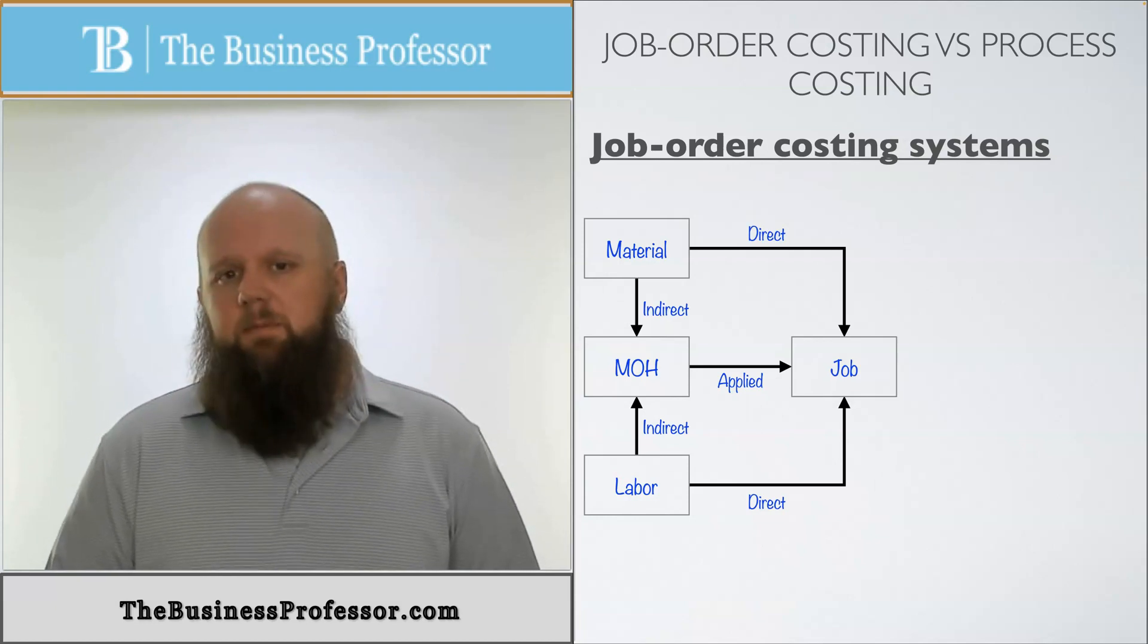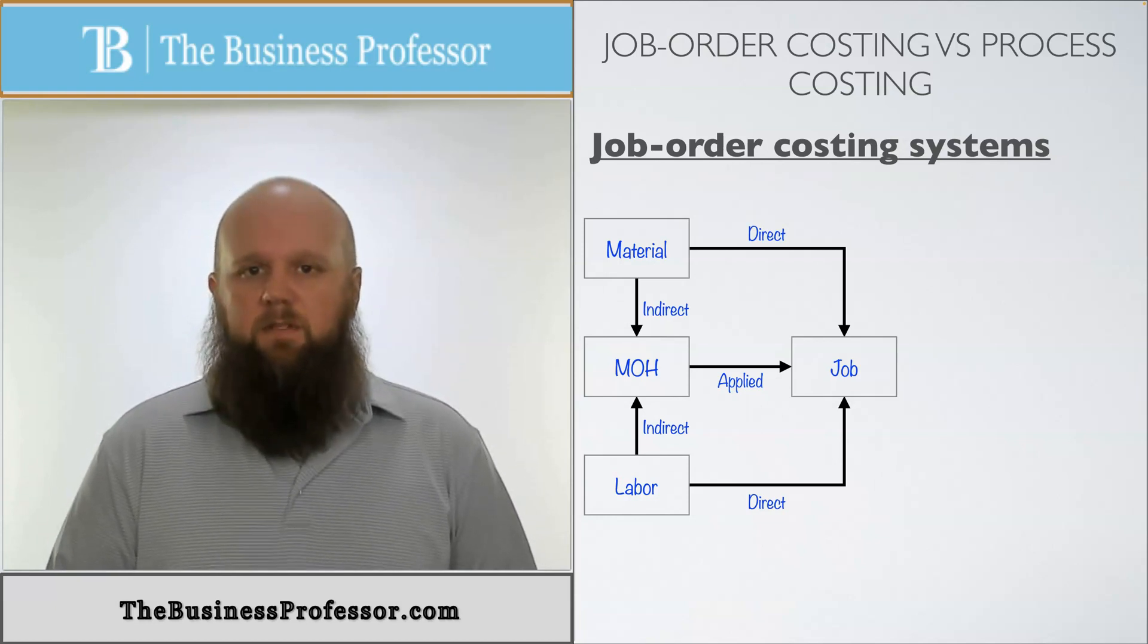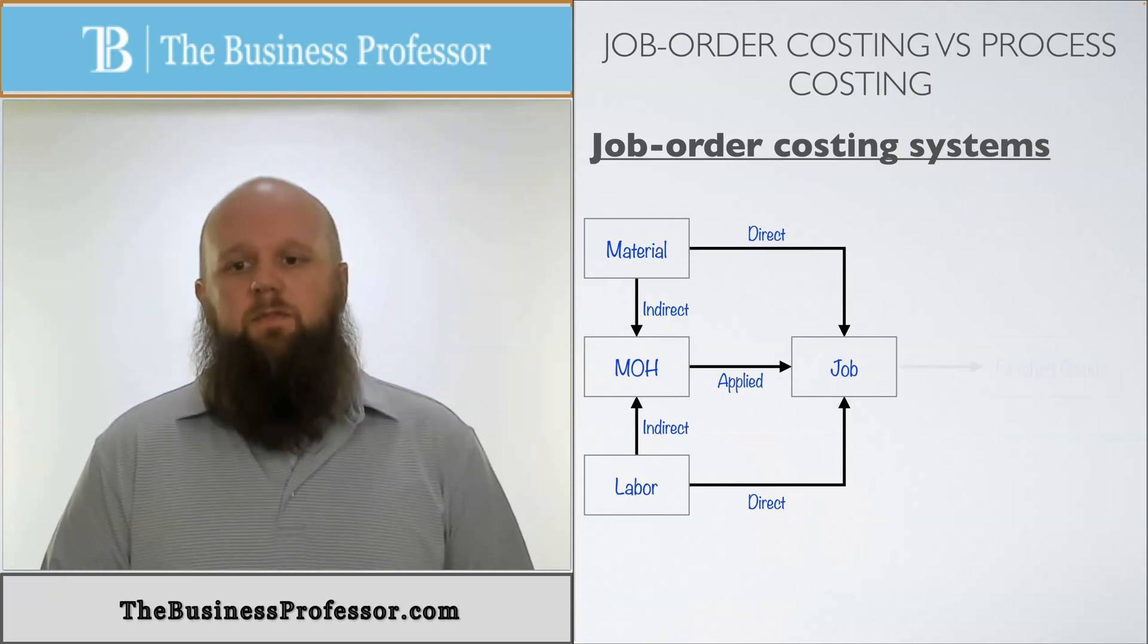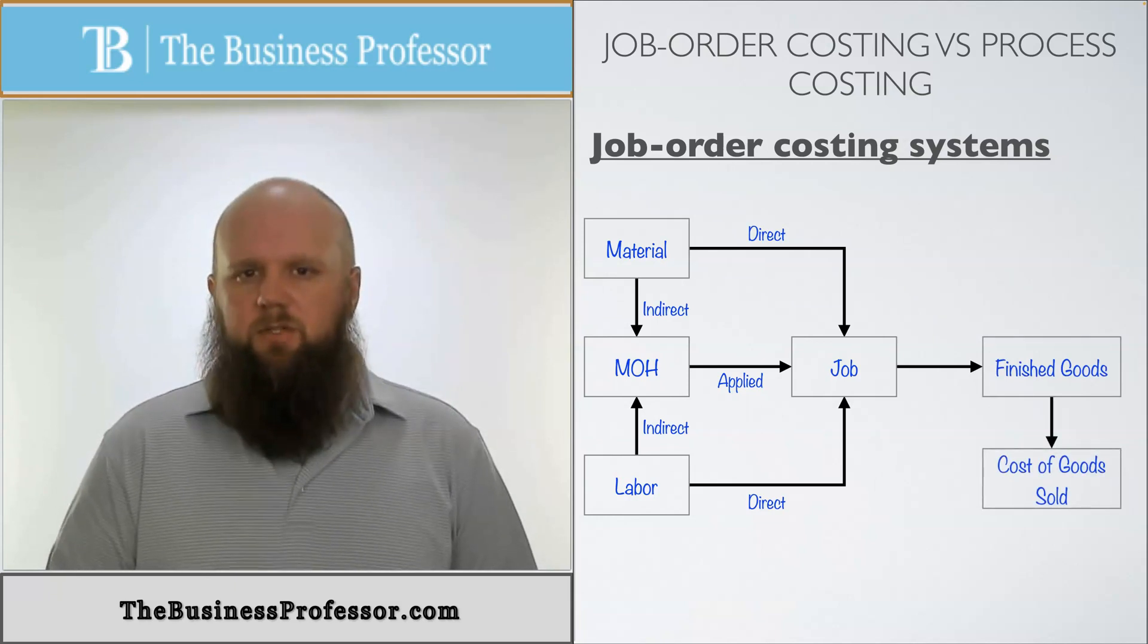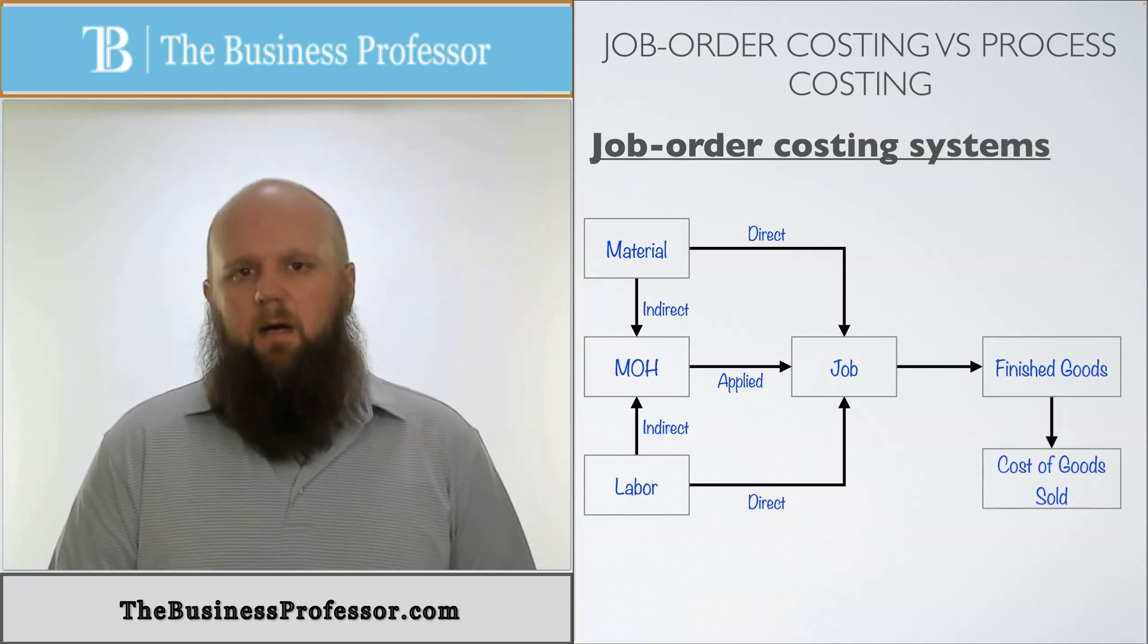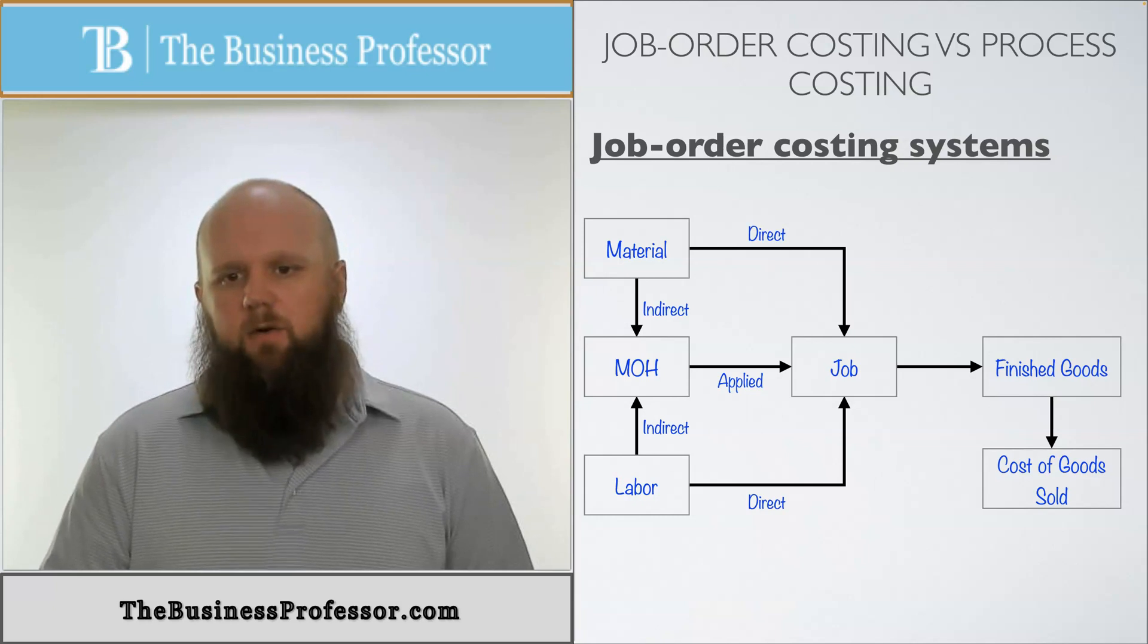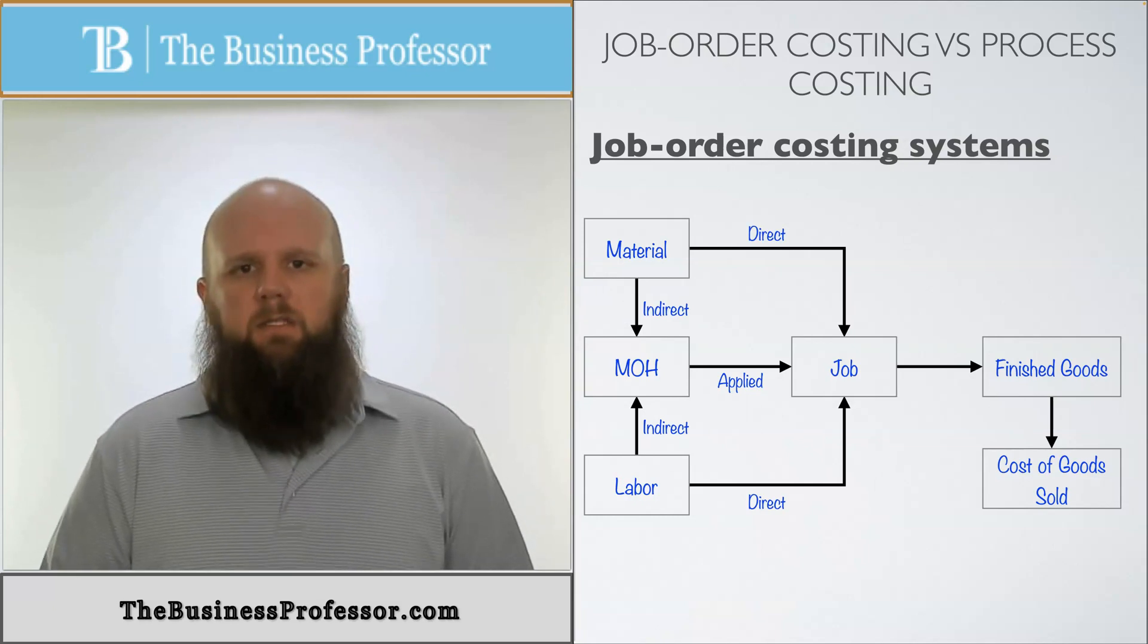Once the job's finished, then obviously if it's 100% finished, it goes into finished goods inventory. Then once it's sold, it goes into cost of goods sold. So it's a very straightforward, basic avenue in which the costs go from job to finished goods to cost of goods sold.